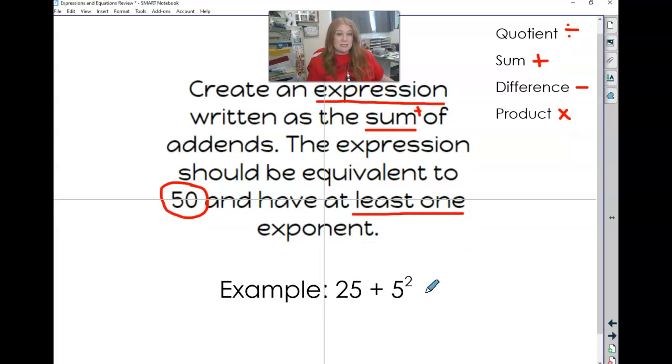So here is an example. You may not use this one as your work. Here is an example. So I took, I started with an addend, a small one. And I kept it easy on myself. And I just squared it. Five times five is 25.